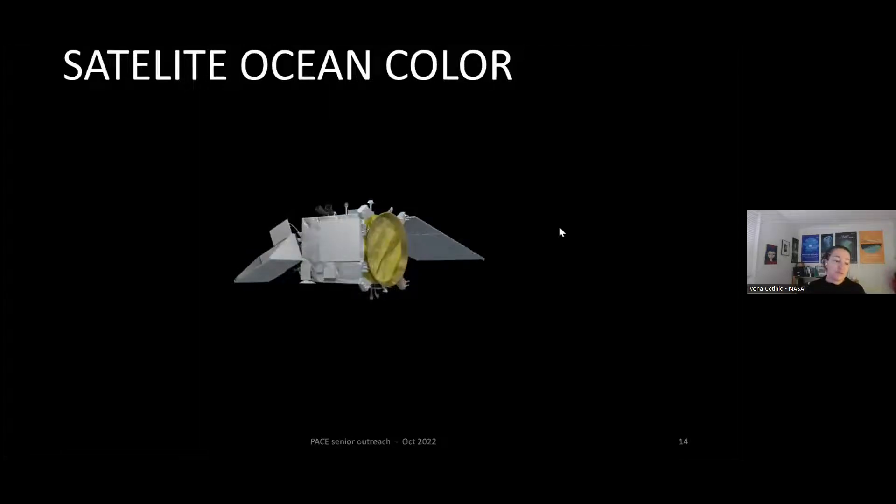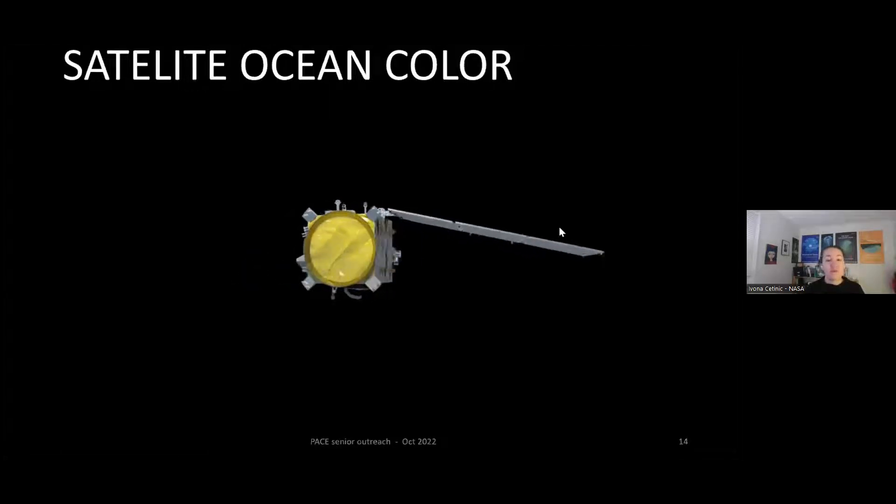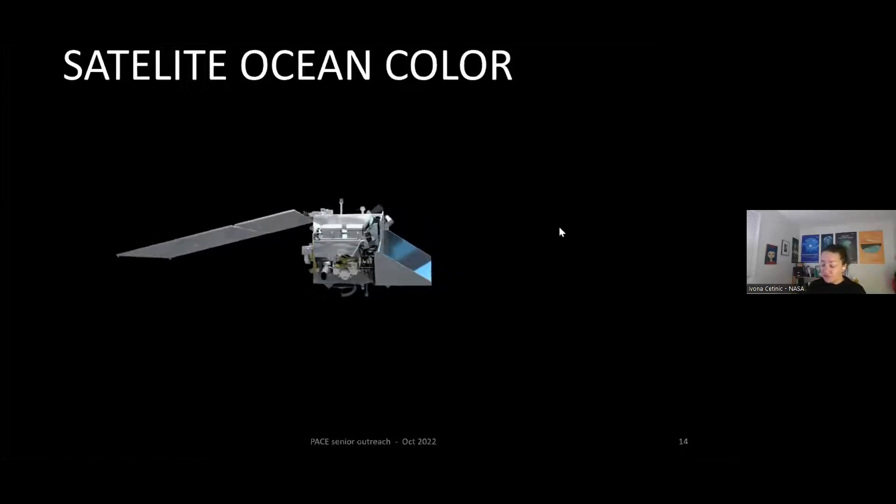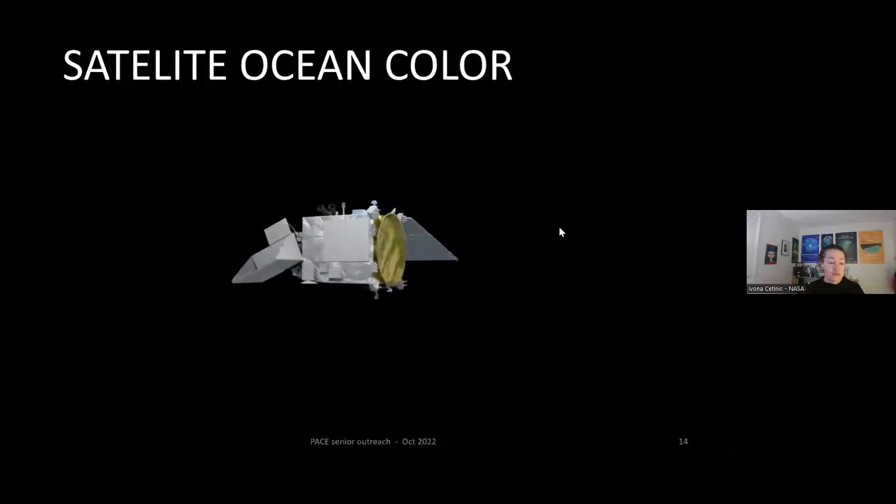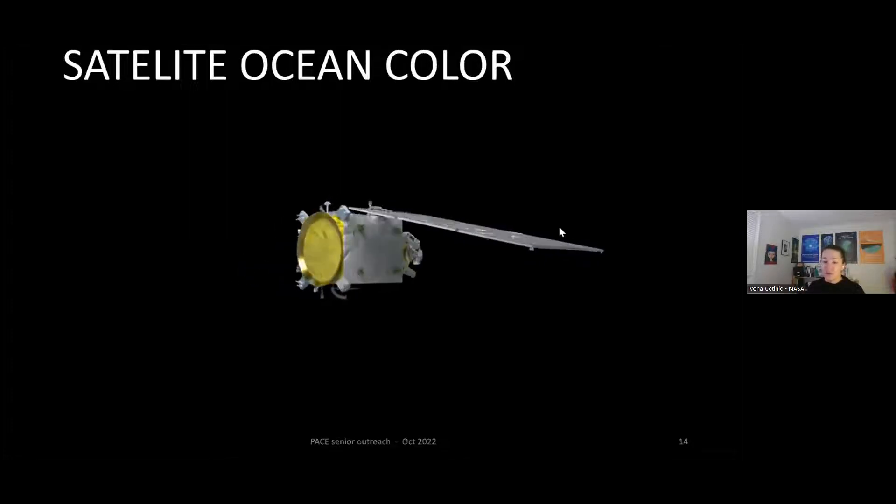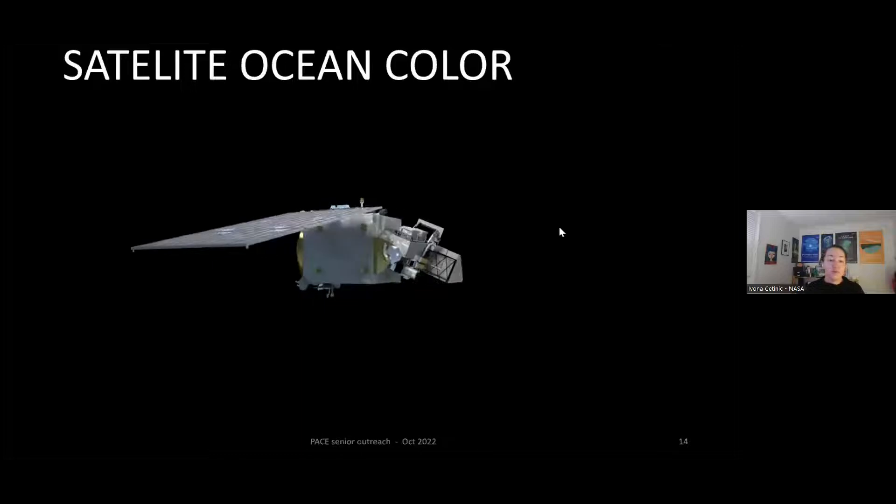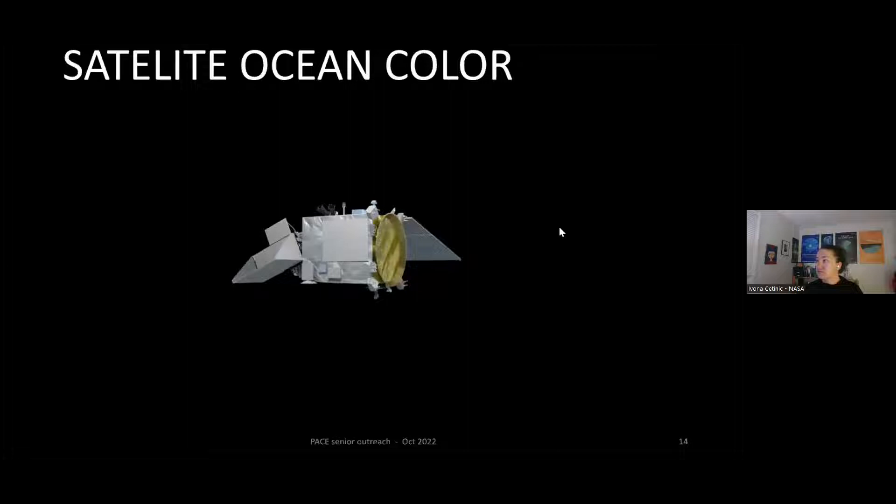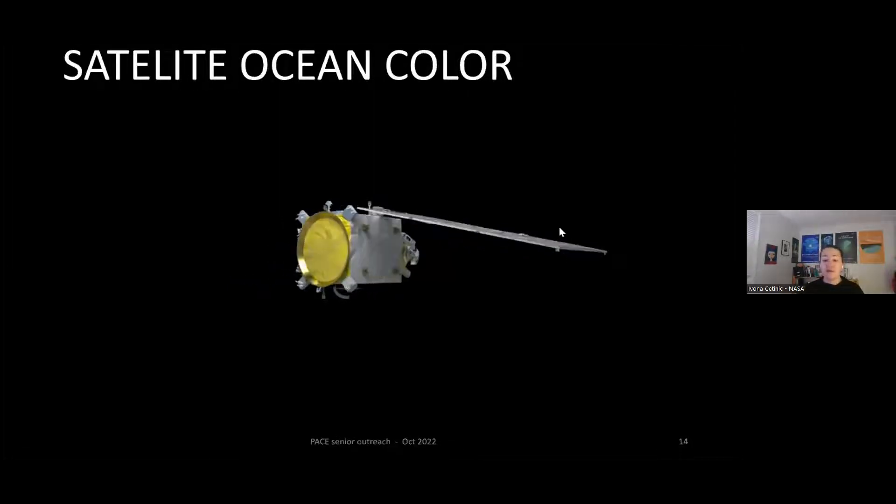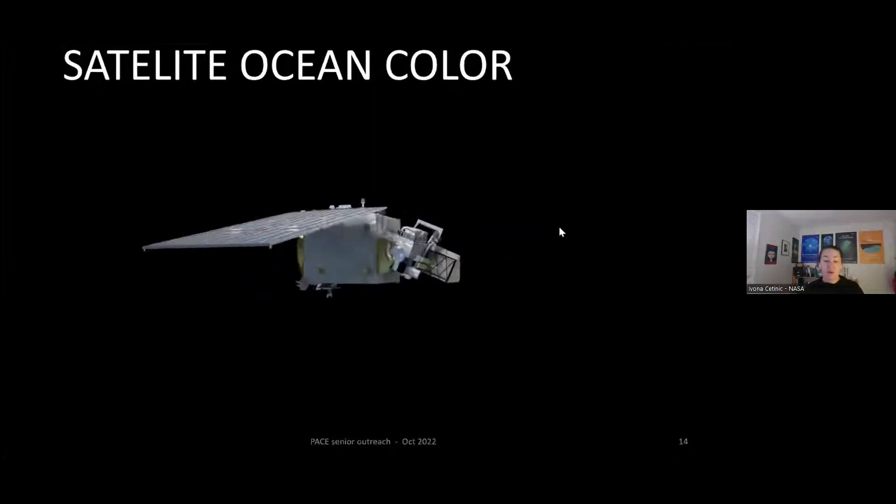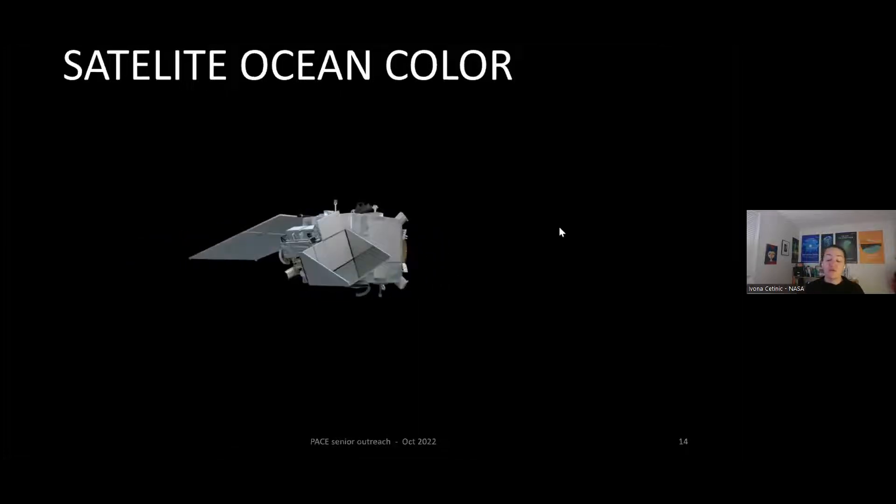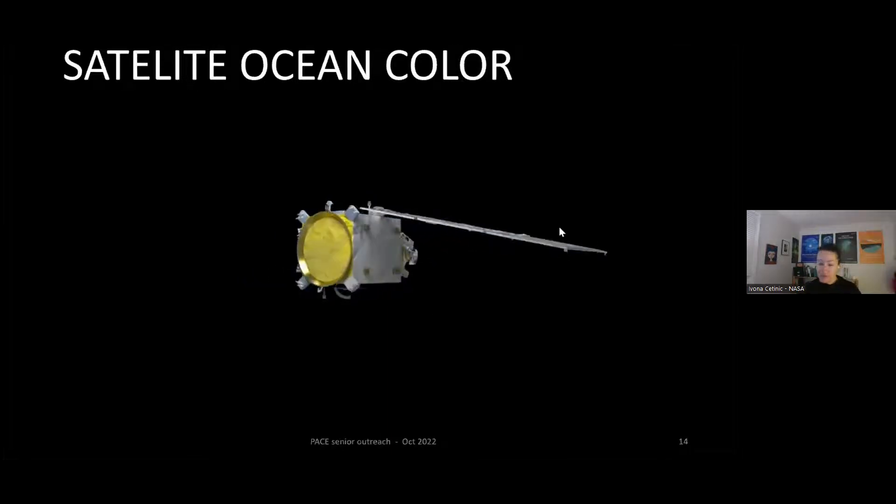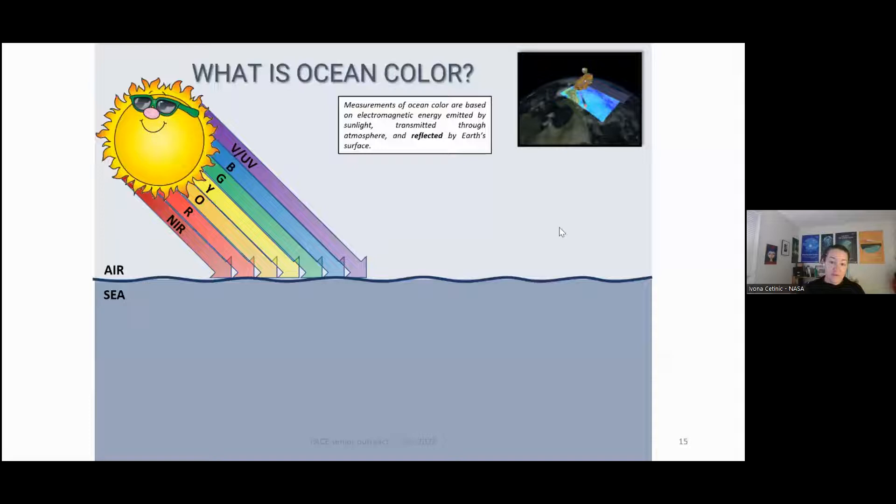So satellite ocean color is something that was started 25 years ago, and it's based on the fact that if you look at the ocean and think, as I said, to the different things that are in the ocean, we're going to see different colors. Well, in the same way, we can deploy a satellite that's going to fly high above us at some 600 kilometers, which is 400-something miles. And it's going to observe that ocean, and we can take that information and try to derive, understand what's in there. Is it phytoplankton? Is it dissolved organic matter? And so on.